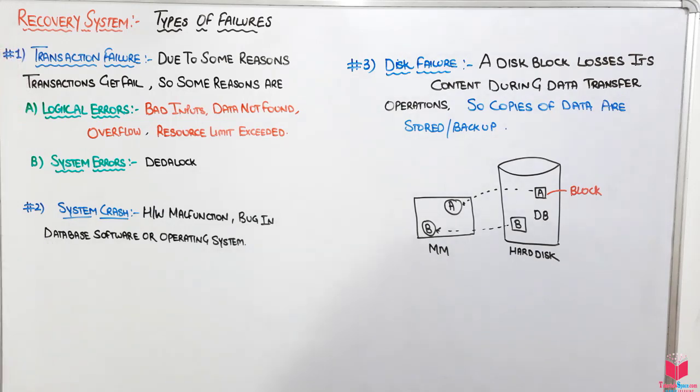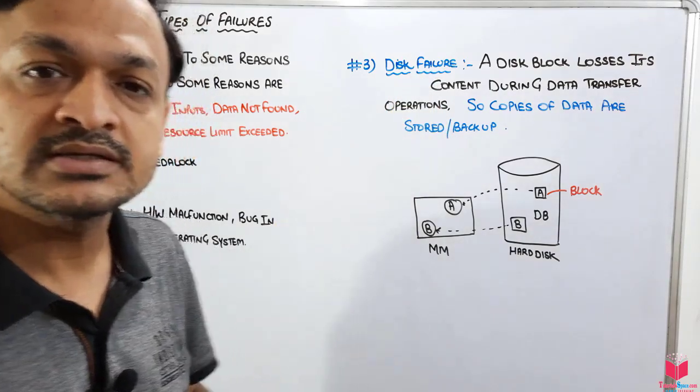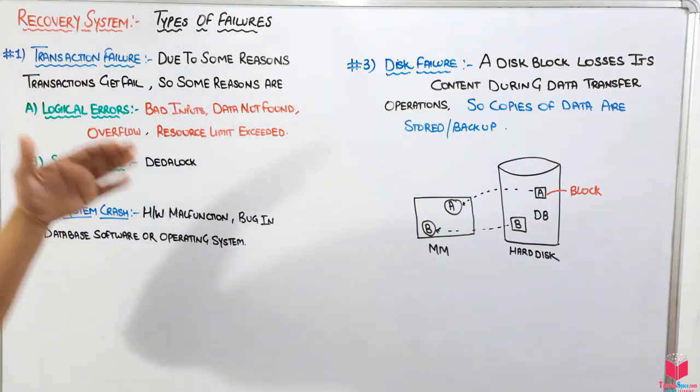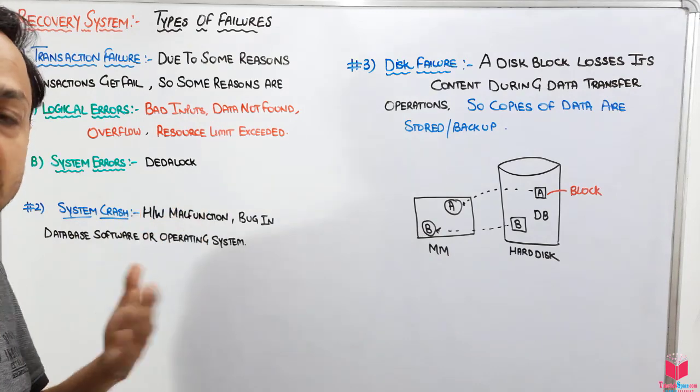Today's topic is types of failure. We have three types of failure: first is transaction failure, second is system crash, and third is disk failure. Let's discuss one by one. Transaction failure is something like while execution we have some errors due to some problems.